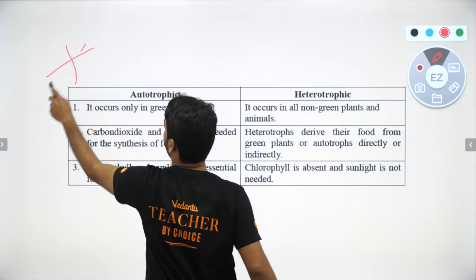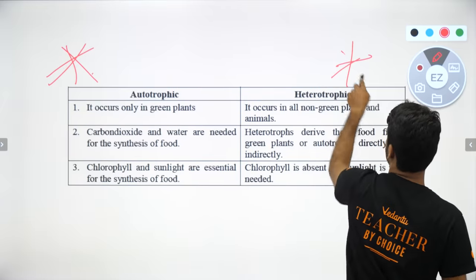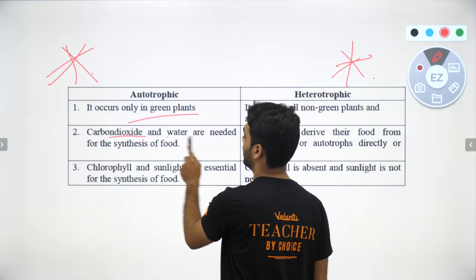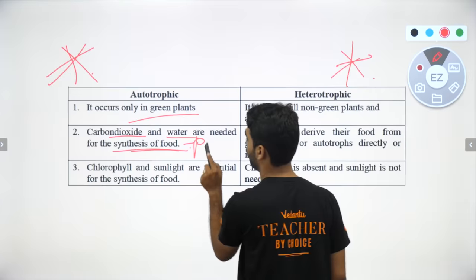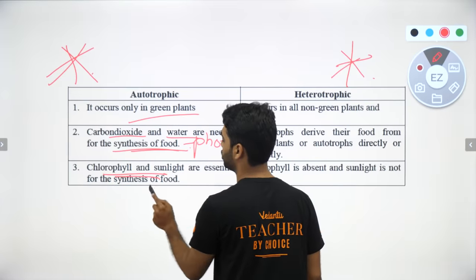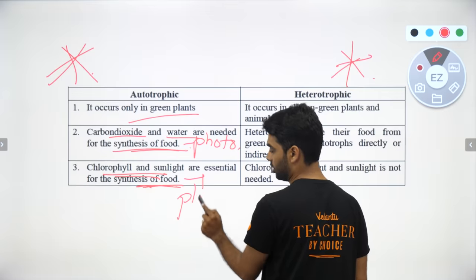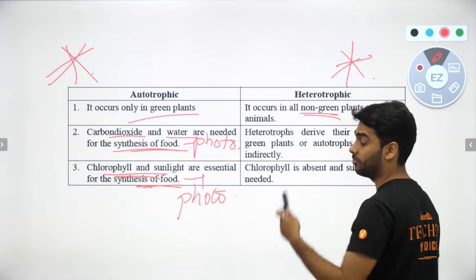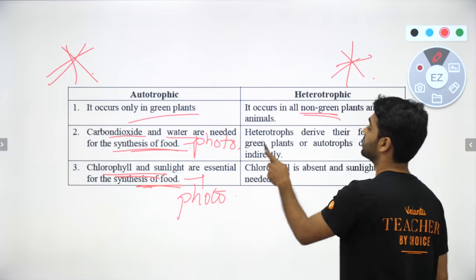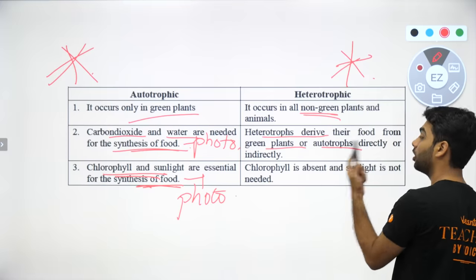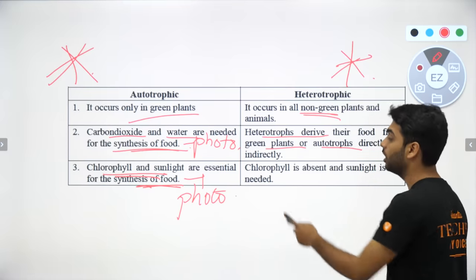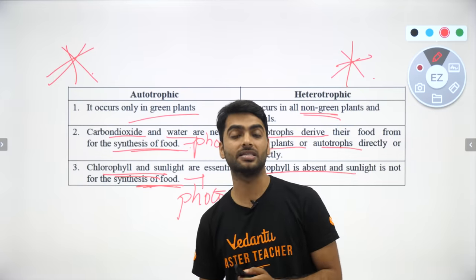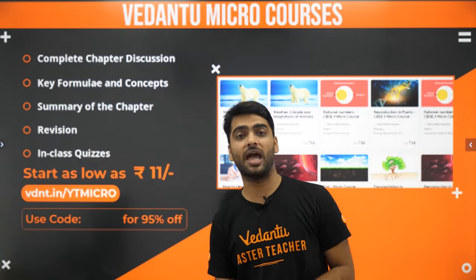The most important question from this chapter is the difference between autotrophic and heterotrophic plants. Autotrophic nutrition occurs in green plants; carbon dioxide and water are needed for the synthesis of food through photosynthesis, and chlorophyll and sunlight are essential. Heterotrophic plants are all non-green plants like Venus flytrap, mushrooms, and lichens. Heterotrophs derive their food from green plants or other autotrophs directly or indirectly; chlorophyll is absent and sunlight is not needed. An example of a non-green plant is a mushroom.